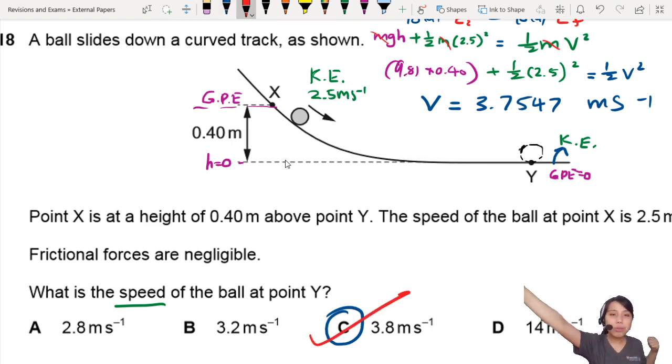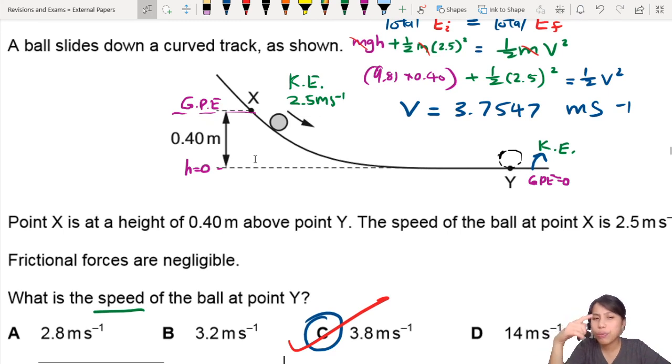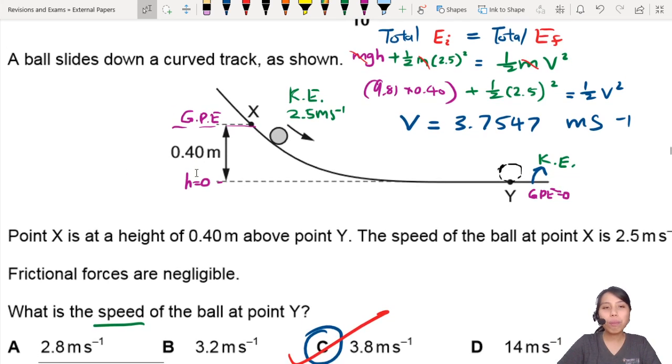So remember, what is the energy being converted? If there's friction, you have to include work done against friction as well. But none of that is here, so very nice. This is how you can do conservation of energy questions for balls going down tracks like this. That's all for this question. I will see you in the next one.